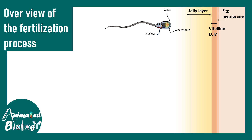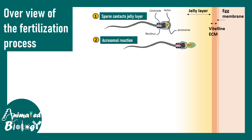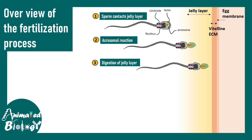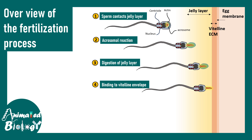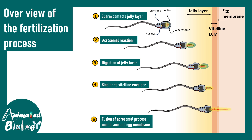The sperm contains a nucleus, acrosome, actin filaments just behind the acrosome, and a centriole. When sperm contacts the jelly-like layer, the acrosomal reaction occurs: granules inside the acrosome are released, helping the sperm penetrate and digest the jelly layer. The sperm gets closer to the vitelline envelope, where receptor-based interactions trigger membrane fusion of sperm and ovum, allowing the nucleus to enter.